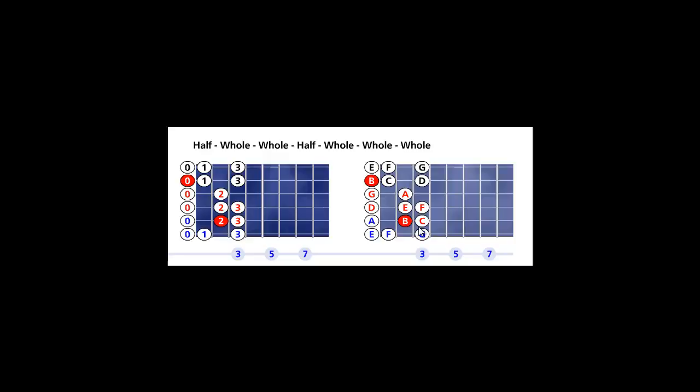B to C is a half, C to D is a whole, D to E is a whole, E to F is a half, F to G is a whole, G to A is a whole, A to B is a whole.